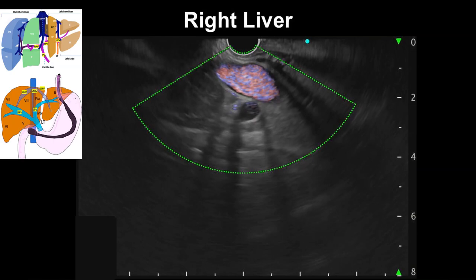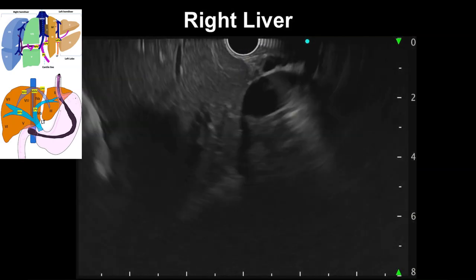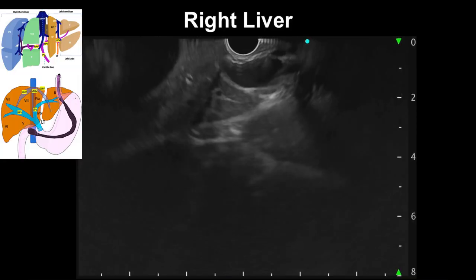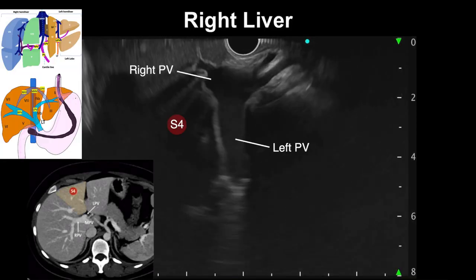With a counterclockwise rotation, the portal vein can be followed up to the hilum, where it branches into the right portal vein — closer to the transducer and running on the left side of the screen — and the left portal vein, running away from the transducer in the lower part of the screen. From this position, segment 4 is seen in front of the main portal vein division.